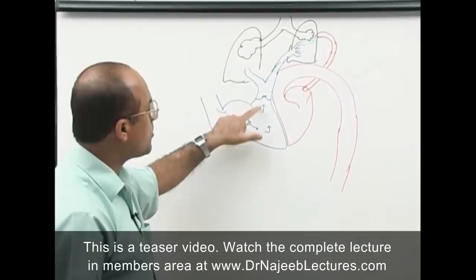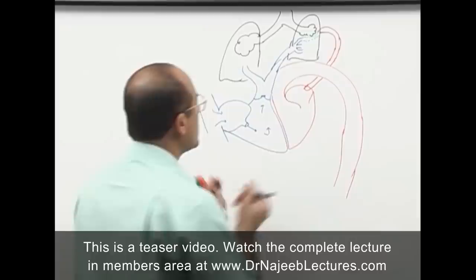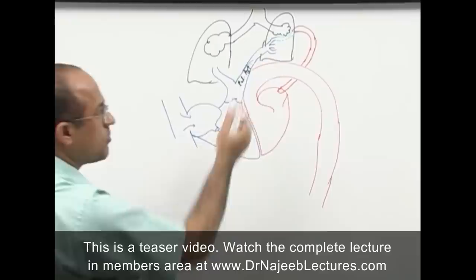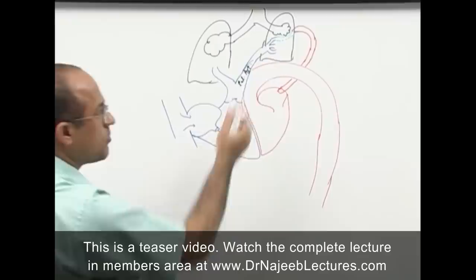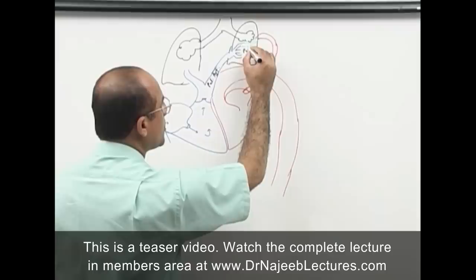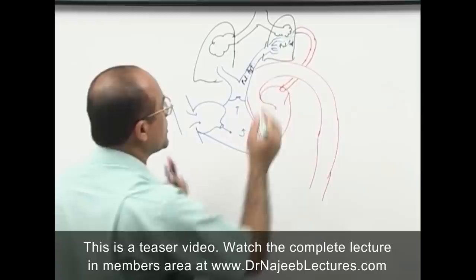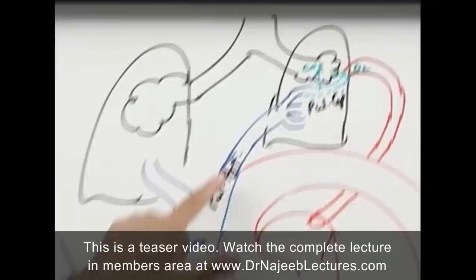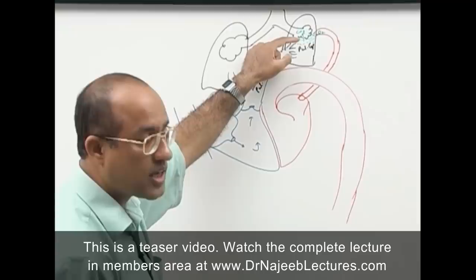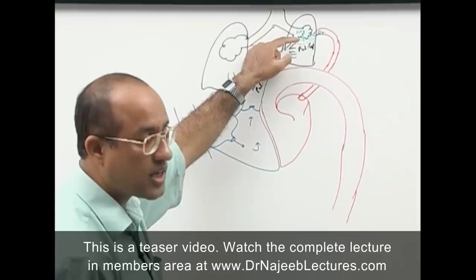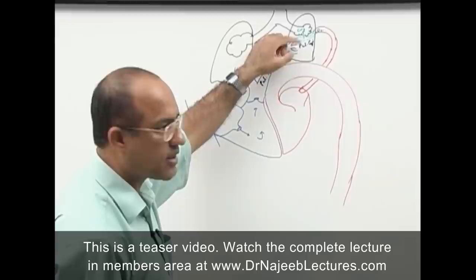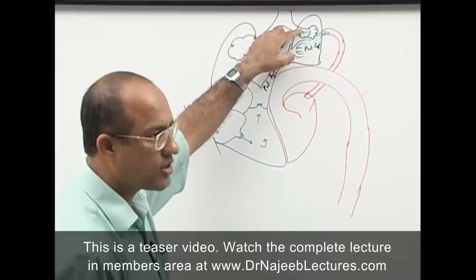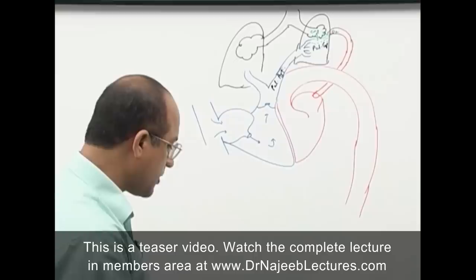In pulmonary circulation, the pulmonary artery takes deoxygenated blood to the lungs, which breaks down into pulmonary arteries, arterioles, and then pulmonary capillaries. Through the pulmonary capillaries, carbon dioxide is lost to the lungs and oxygen is gained. Then oxygenated blood moves to the left heart.